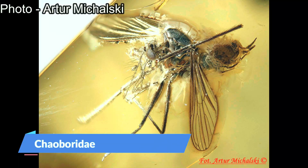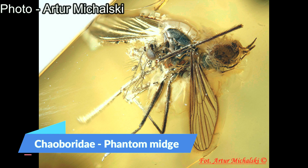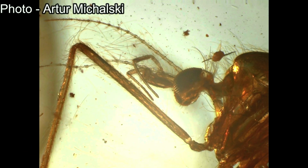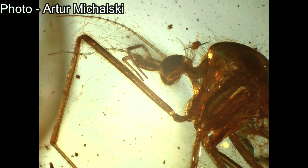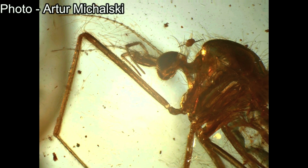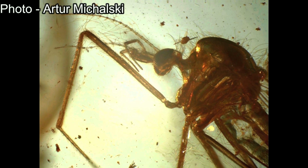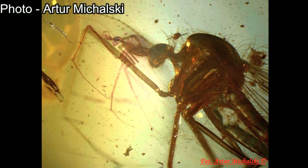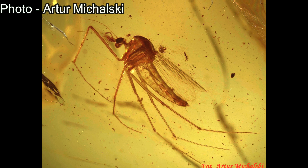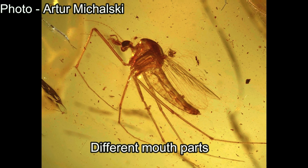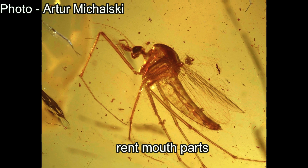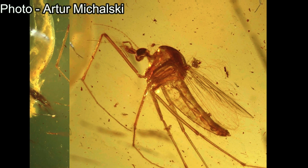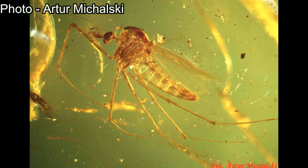Next in line is the phantom midge, Chaoboridae. The name is menacing, right? But once again, the main difference is the lack of a long proboscis. Phantom midges have very different mouthparts, but their wings, eyes, legs, fluffy antennae, and general body composition are very similar to mosquitoes.